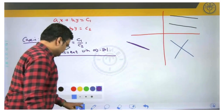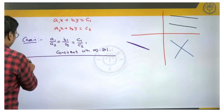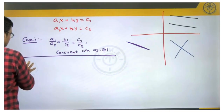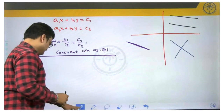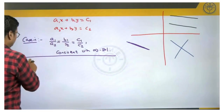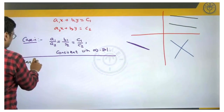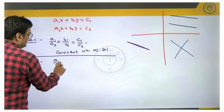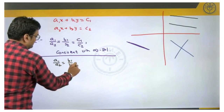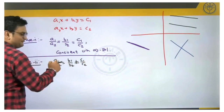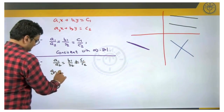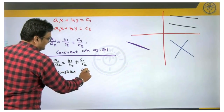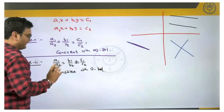Case 2 is the parallel lines case. The condition for parallel lines is that the ratio of x coefficients equals the ratio of y coefficients, but is not equal to the ratio of constant terms — a1/a2 = b1/b2 ≠ c1/c2. This is called an inconsistent set of equations, and they will have no solutions — 0 solutions.